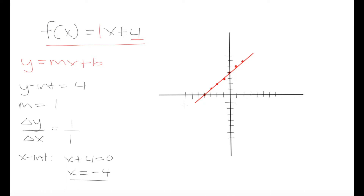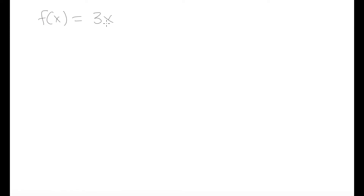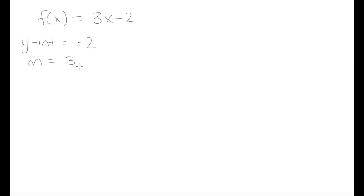Let's look at one more example: f of x equals 3x minus 2. We are asked to graph this function. By looking at it, we can tell that our y-intercept is negative 2 and our slope is 3. We write this slope as 3 over 1 because when graphing we use the slope to find our vertical change over our horizontal change.